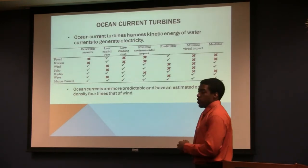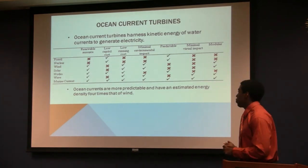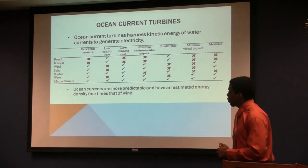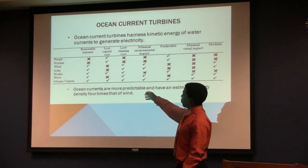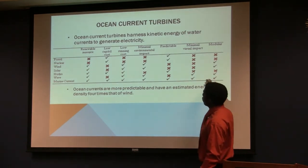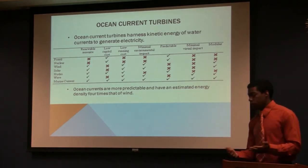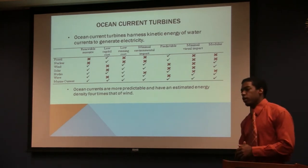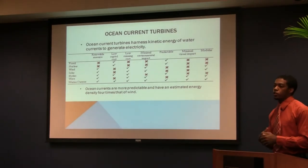Ocean current turbines, similar to wind turbines as stated, harness the kinetic energy of the ocean to create electricity. Compared to other sources of energy at the moment, marine current turbines have all these faculties. They are predictable, and predictability is essential when it's going to be connected to the grid.